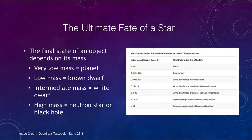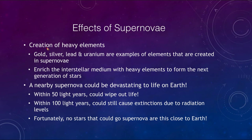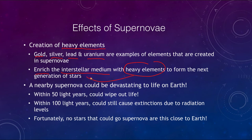What are some of the effects of a supernova explosion? First of all, it creates heavy elements — gold, silver, lead, and uranium are examples of elements that can be created in a supernova explosion. Not only does it create them, but it also enriches the interstellar medium with these heavy elements to help form the next generation of stars. The first generation of stars would have had only hydrogen and helium; later generations would have had carbon, oxygen, and silicon, and as supernovae continue to enrich the medium, we get more gold, silver, lead, and uranium.